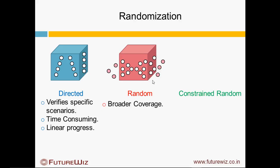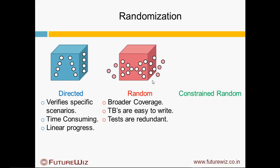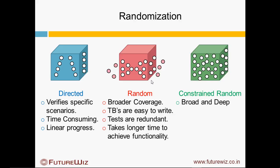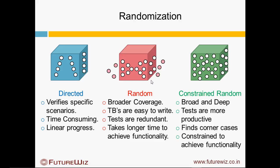In the case of random testing, we get broader coverage and test benches are easier to write, but tests can be redundant and it takes longer time to achieve a particular functionality. Constraint Randomization offers broad and deep coverage, tests are more productive, it helps in finding corner cases, and it can be constrained to achieve better functionality.